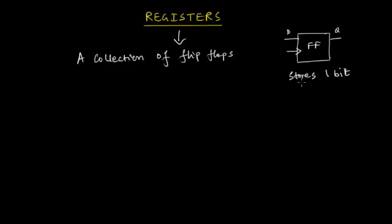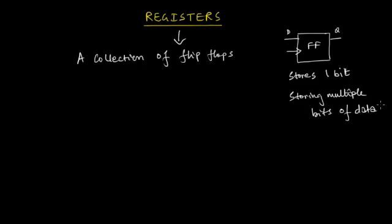So how can we store multiple bits of data at the same time? The problem is storing multiple data bits. Whenever we need to store multiple bits of data, we use registers. A flip-flop stores just a single bit, so whenever you need to store multiple bits you would require many such flip-flops.